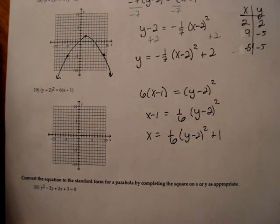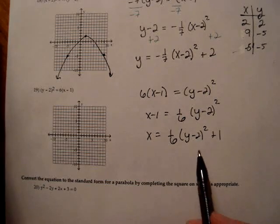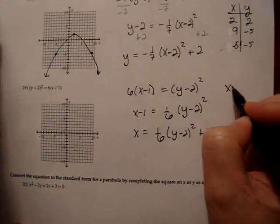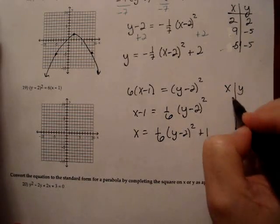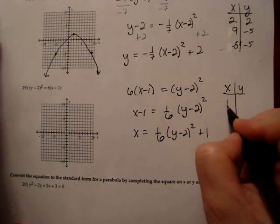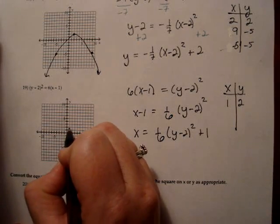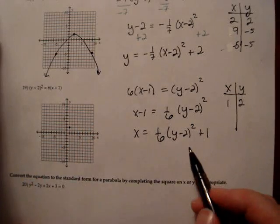And there it is. There is standard form. So I know the vertex is at, be very careful, let's make our x, y table, 1, 2. That's where my vertex is, 1, 2. So I can plot that, 1, 2. I'm going to use my same trick.